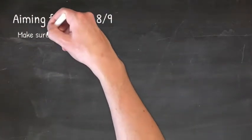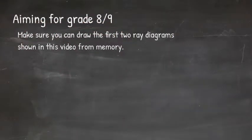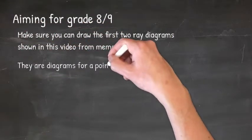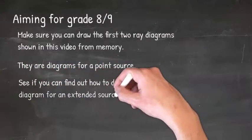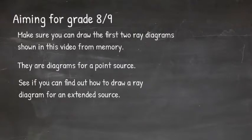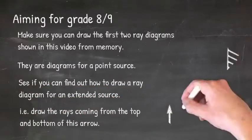If you are aiming for a grade eight or nine, you must make sure that you can draw the first two ray diagrams shown in this video from memory. They are diagrams for a point source. See if you can find out how to draw a ray diagram for an extended source, i.e. draw the rays coming from the top and bottom of this arrow.